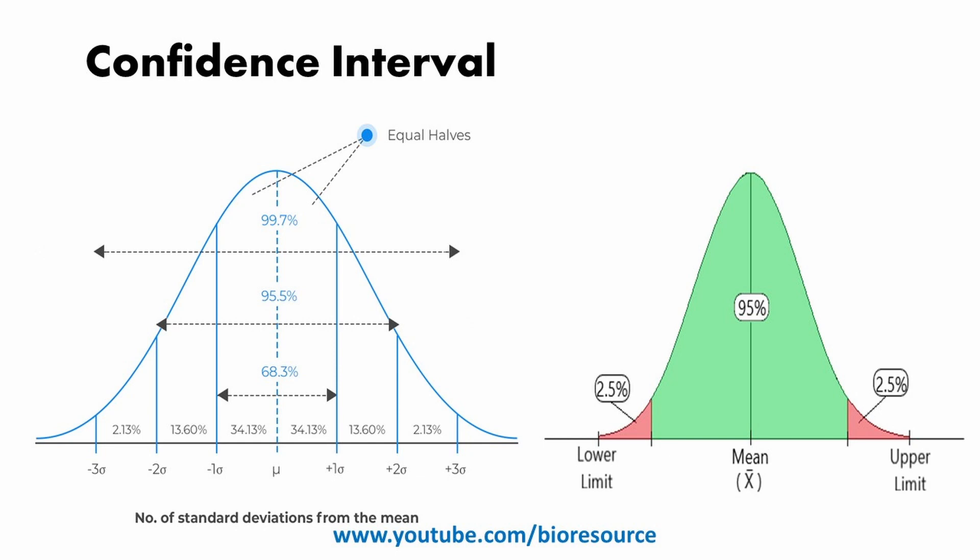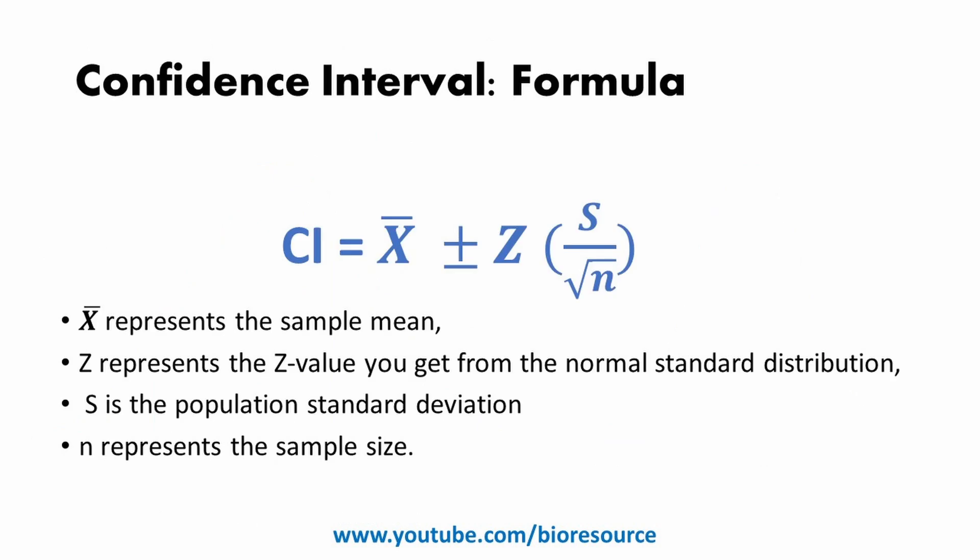So now let's calculate the confidence interval using the formula: CI equals x-bar plus or minus z times s divided by the square root of n. Here x-bar represents the sample mean, z is the z-value from the standard normal distribution, s is the sample standard deviation, and n is the sample size. The standard deviation calculated for population data is denoted by sigma, while the standard deviation calculated for sample data is denoted by s.